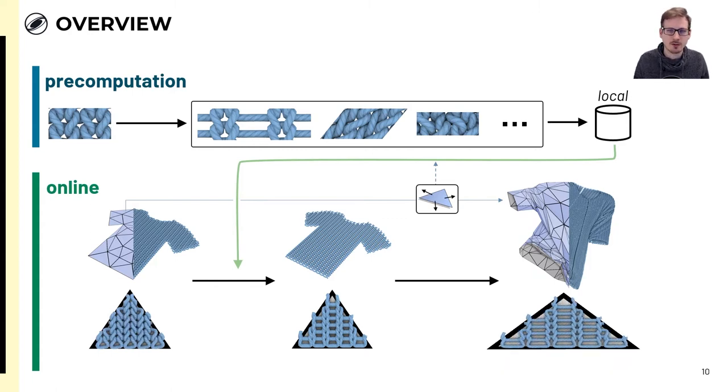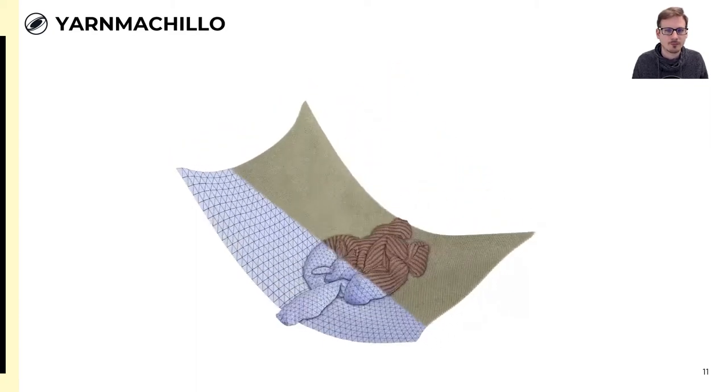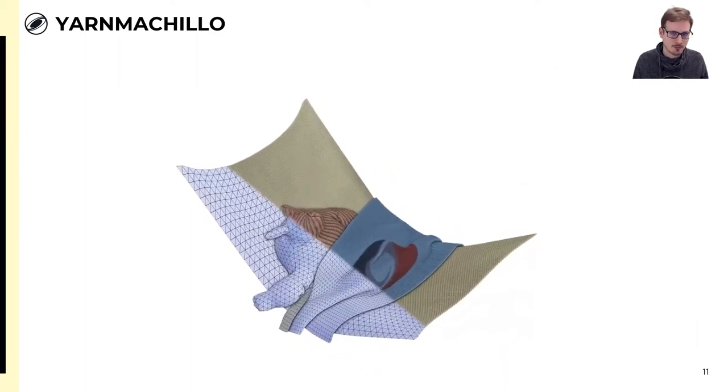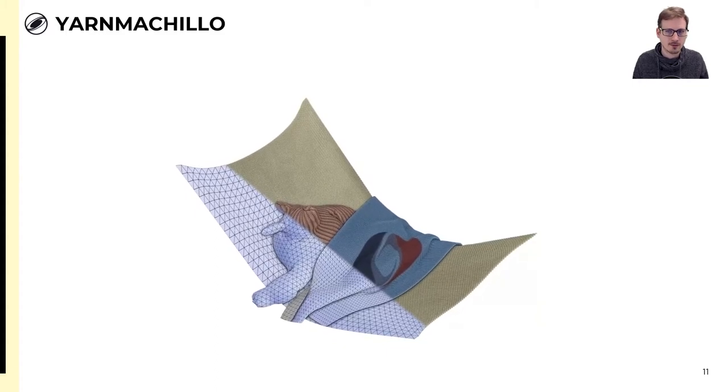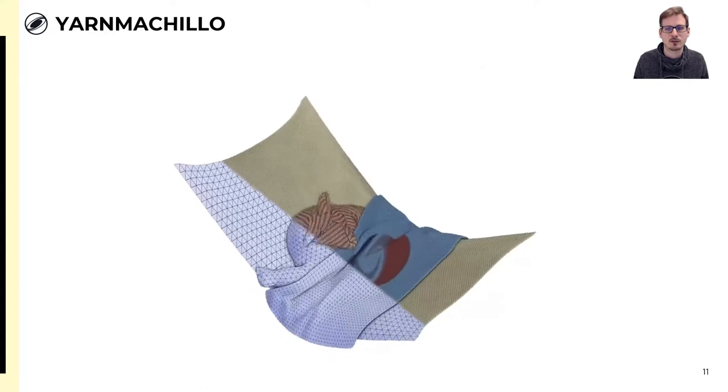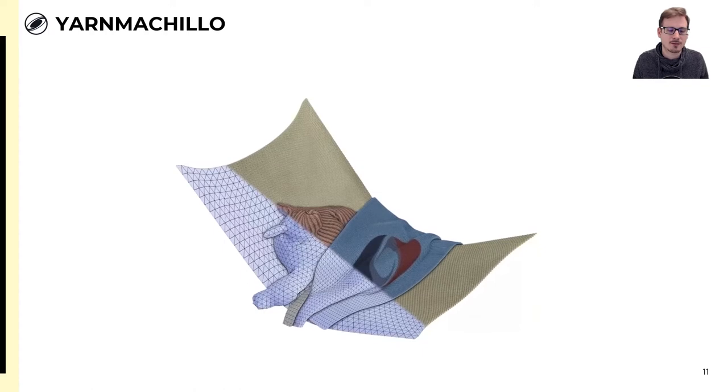All operations on the yarn geometry after the initial tiling are trivially parallel per yarn vertex, and we implement them on the GPU, making the method real-time even for millions of vertices. And this allows us to animate this yarn armadillo chilling in a hammock with a couple million yarn vertices. Even though we limit ourselves to periodic yarn geometries, this approach of interpolating pre-simulated local details allows us to imitate yarn-level simulation at basically only the cost of the underlying mesh simulation. The mechanics-aware yarn detail is unconditionally stable in the sense that it can't blow up and it has negligible cost.